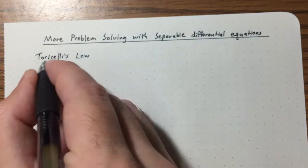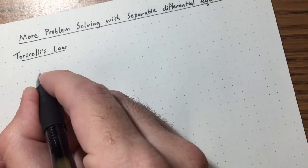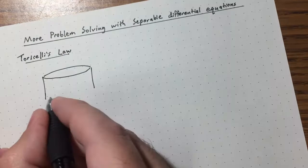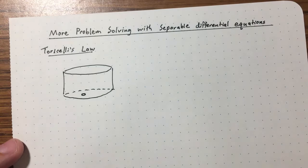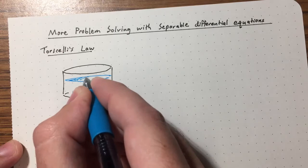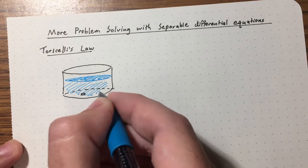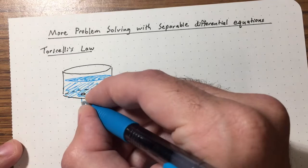This is an example from physics. The setup is we have a cylindrical tank of water, and there's a hole in the bottom of this tank through which the water is leaking out. The tank is filled up to a certain level at this particular moment in time, and the water is leaking out through this hole.